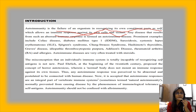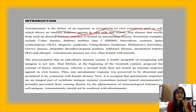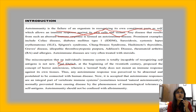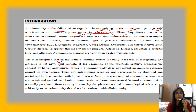The misconception that the individual immune system is totally capable of recognizing self-antigens is not a new thing. In the 20th century, there was a scientist, Paul Ehrlich — you will know about him from the very first chapter of Kuby — he is a pioneer of immunology. He gave the concept of 'horror autotoxicus.' In this concept, the normal body does not mount an immune response against its own tissues. But in autoimmunity, our own immune cells act against our own organ cells.